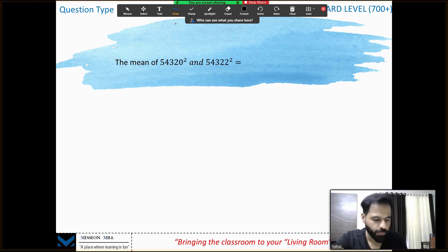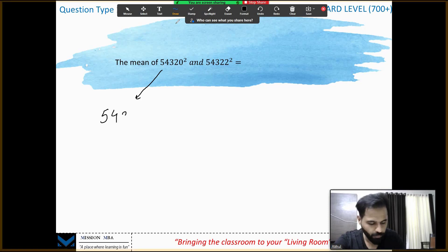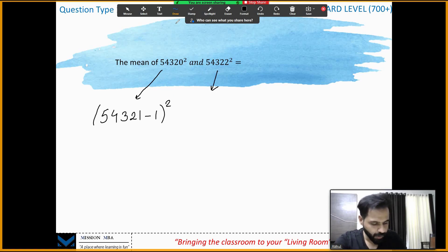What I'm going to do is I'm going to write this as 54321 minus 1 whole square, and I'm going to write this as 54321 plus 1 whole square. That's it, now it's done.